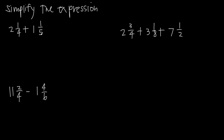So when I say 2 and 1/4 plus 1 and 1/5, what I want to do is add the whole numbers together — 2 plus 1 — and then separately add my fractions: 1/4 plus 1/5. Adding my whole numbers is going to be really easy; that's going to be 3. Adding my fractions is going to be a little more complicated simply because I'm going to need a common denominator.